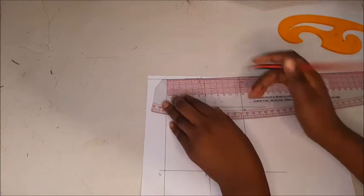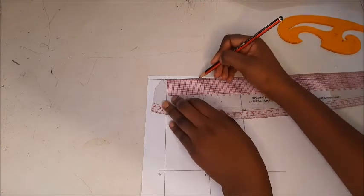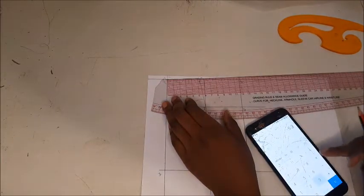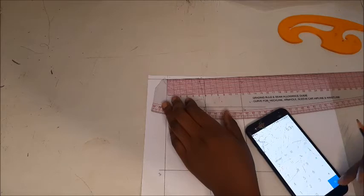Now divide line number one to 10 in three equal parts. And those points, you're going to draw lines that are going inwards, which are perpendicular to the line that you have just drawn, which is line one to number 10.